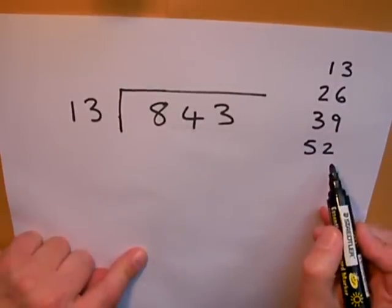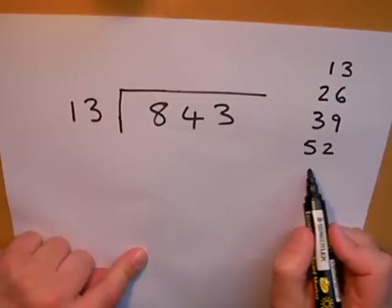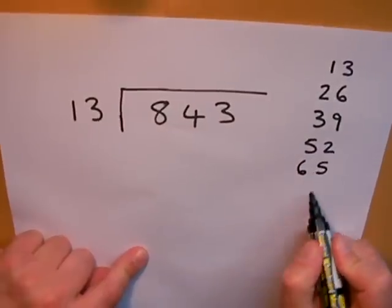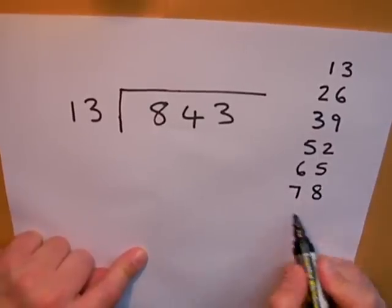I can make 84 quite a few 13s, so let's have a look. Let's keep adding until I get up to 84. Another 13 onto this is 65, another 13 on again is 78, and if I had another 13 on again I get 91.